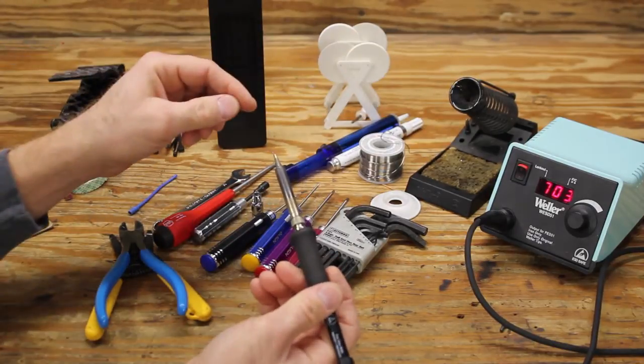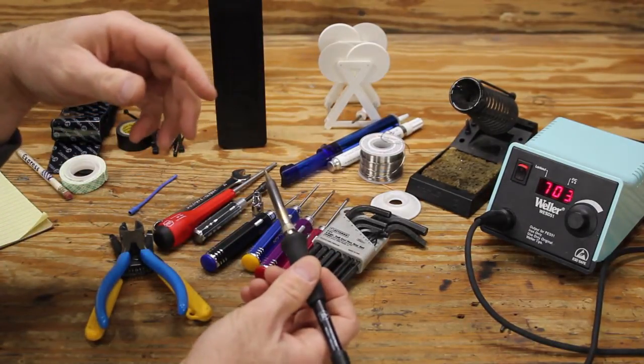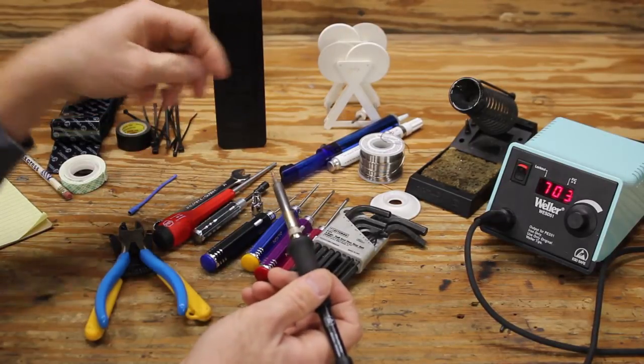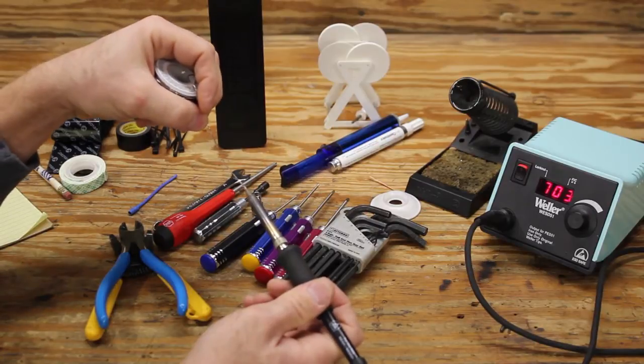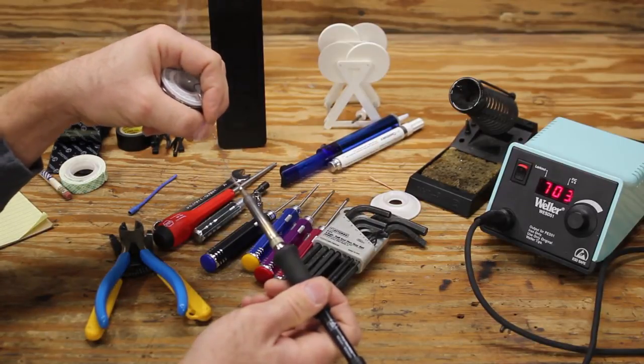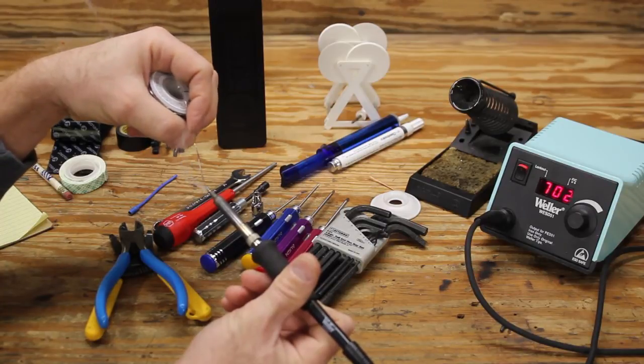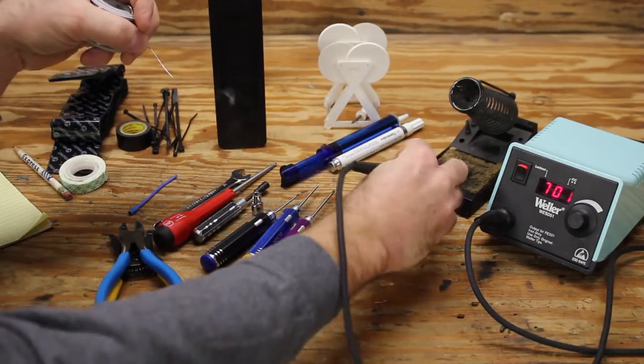The first thing you have to do when you get this is plug it in, turn it on, set it to about 700 or so. You want to do what's called tinning the tip. What you're doing is cleaning the tip and sealing it. You're coating it with solder.